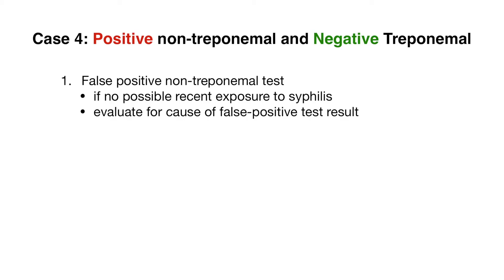This would be the case if the patient reports no possible recent exposure to syphilis — keeping in mind that there can be false negatives when testing very early in the setting of active infection. If you're sure this is a false positive result, you'd also want to evaluate for reasons why, such as ruling out other underlying conditions like lupus.